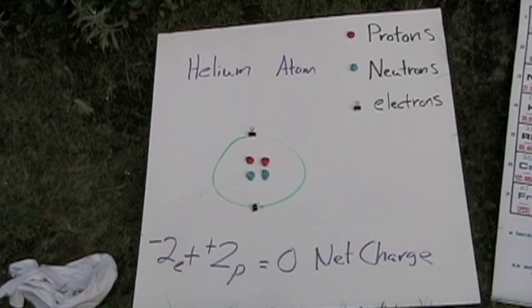and you'll see how the red is for protons, blue is for neutrons, and the paper clips, or binder clips, are for electrons. You have 2 protons in the center, 2 neutrons, and 2 electrons.